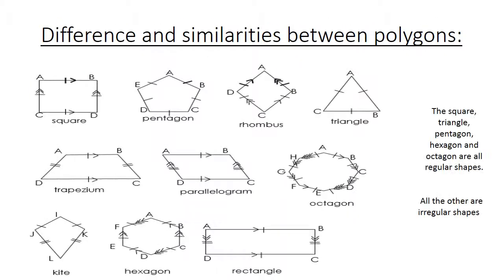Differences and similarities between polygons. Here we have the square, my triangle, my pentagon, my hexagon, and my octagon. They are all regular shapes. All the others are irregular shapes.